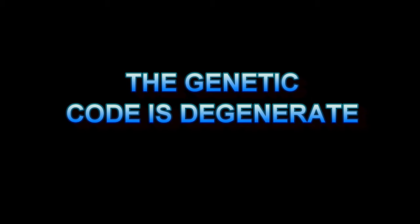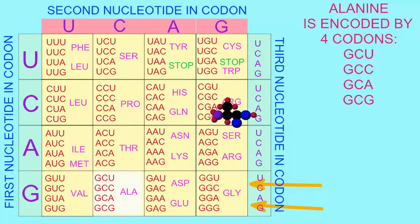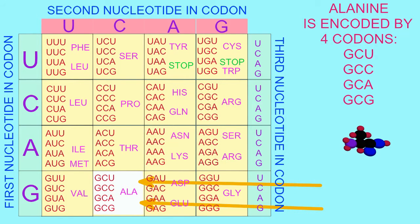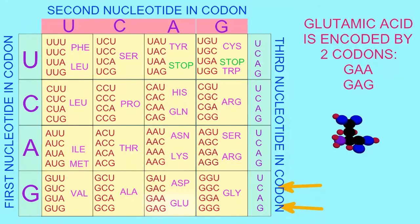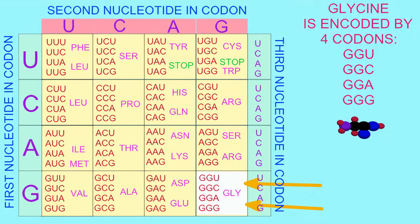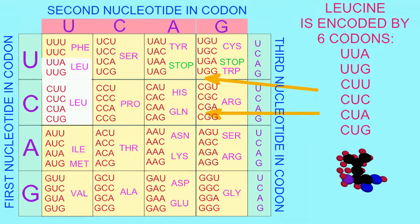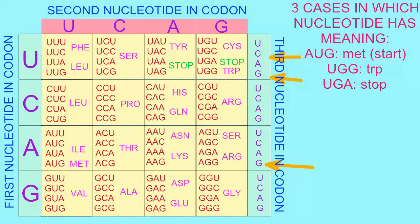The DNA code is sometimes referred to as a degenerate code in that there are synonyms — more than one different codon can code for the same amino acid. Very often, it is the third nucleotide in the codon which is less important, since many combinations which vary in their third nucleotide code for the same amino acid. There are only three cases in which the third base specifically implies meaning.